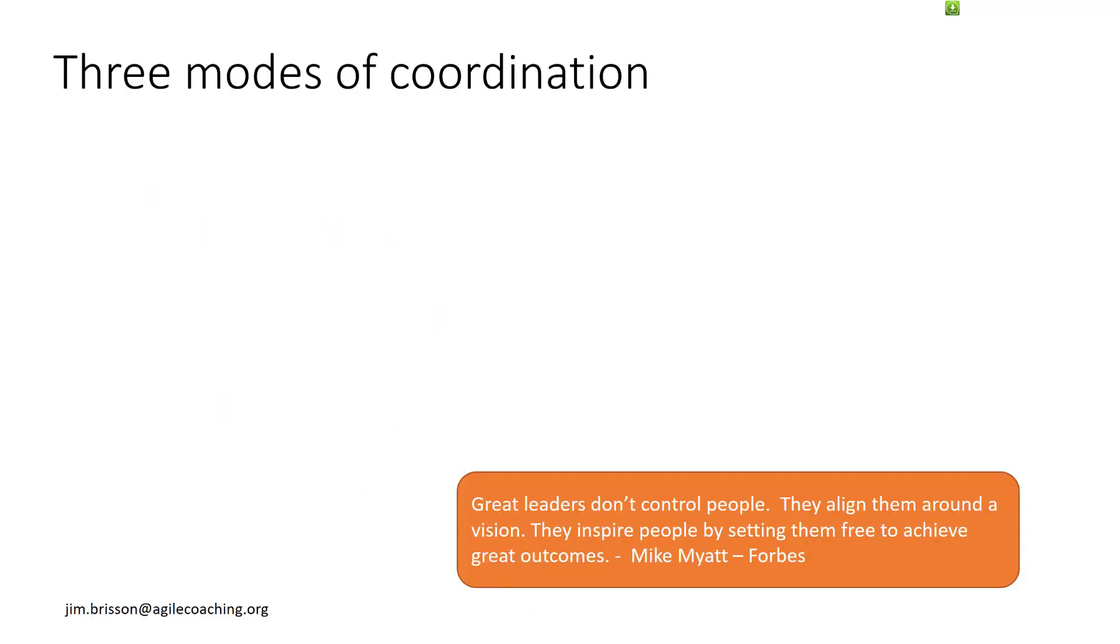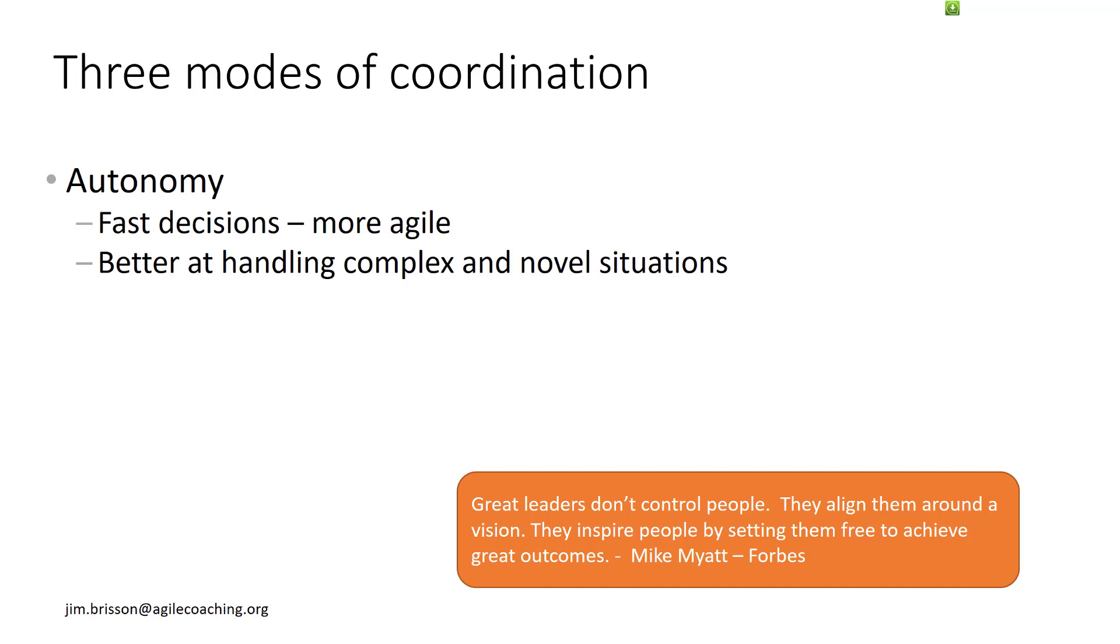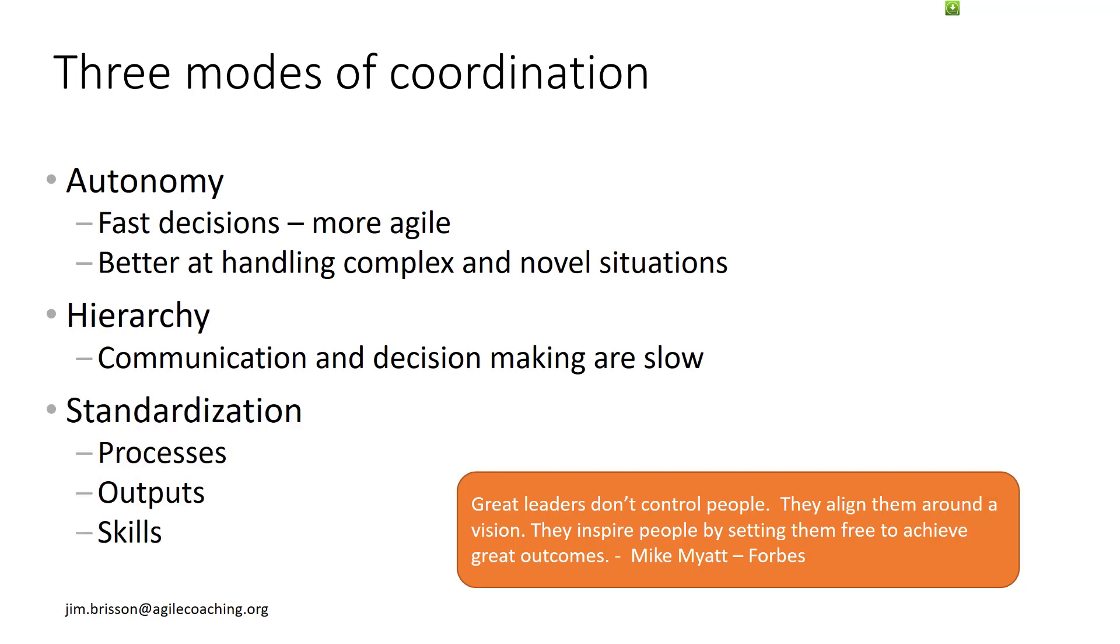So let's jump right into the sociology. Now, I'm not a sociologist and I'm not pretending to be. There are three basic methods of coordination: Autonomy, which yields fast decisions and more flexibility. Hierarchical, where management, perhaps multiple levels, coordinate. So communication and decision making is slow. And standardization, where rules and phase gates and processes dictate how coordination occurs.